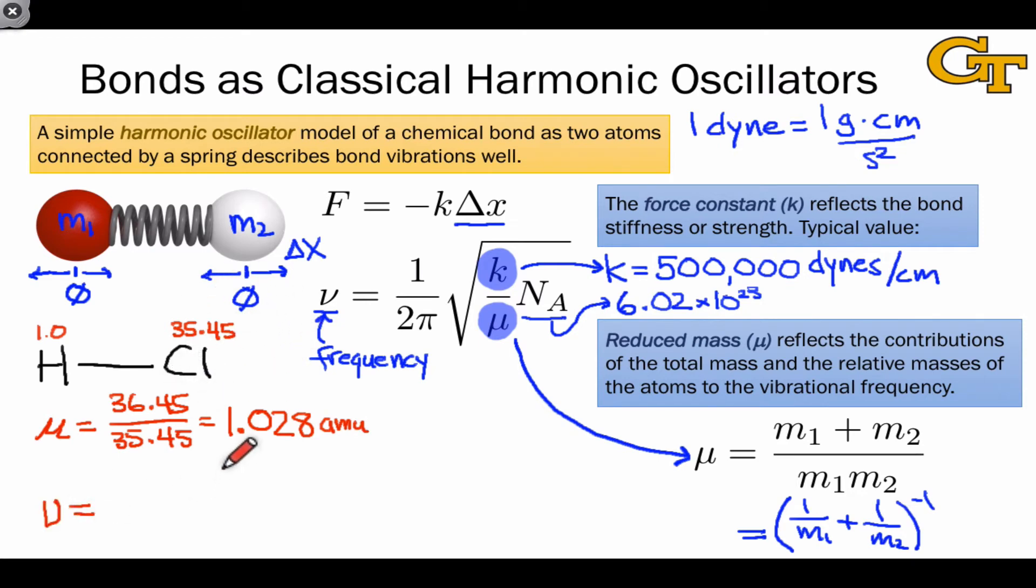Plugging in to the frequency equation, we obtain that the frequency here is 8.61 times 10 to the 13 hertz, which is in very good agreement with the experimentally measured value for the vibrational frequency of HCl. Although we haven't talked about them yet, I'll go ahead and express this number in wavenumbers as well. It's 2,870 wavenumbers or per centimeter, and this is right smack in the middle of the infrared region.